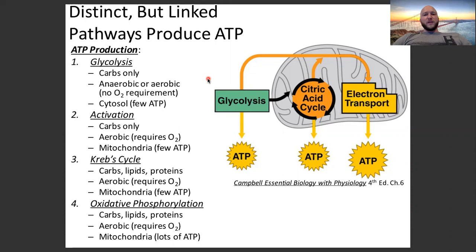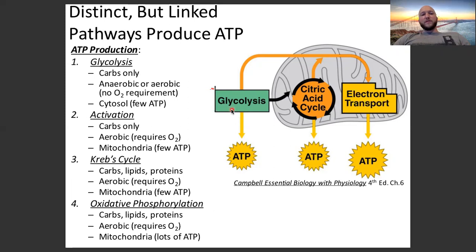In part one, we followed the story of a glucose molecule going through glycolysis, then activation, then the citric acid cycle, then the electron transport chain, producing ATP all along the way. For this video, I'm going to assume you know what glycolysis is, what activation is, what the citric acid cycle is, and what the electron transport chain is — the full story of one glucose molecule.